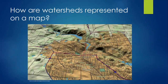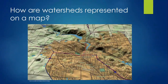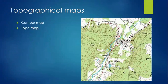From the activity, you probably noticed that watersheds are 3D structures, with high and low points. So how are watersheds represented on a 2D map? The answer is topographical maps. You may have heard them called topo or contour maps, too.